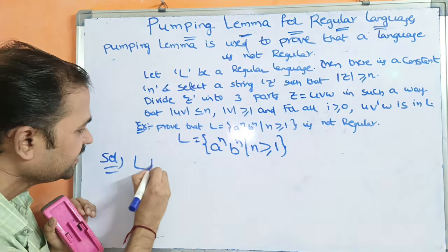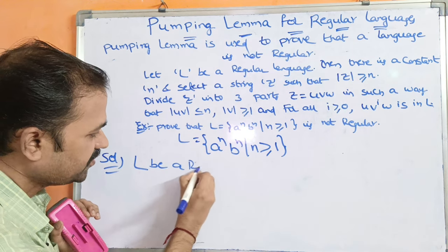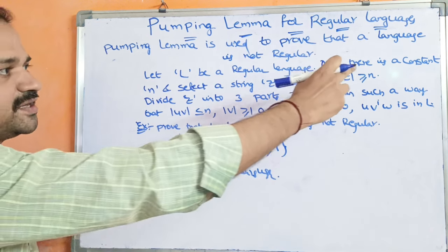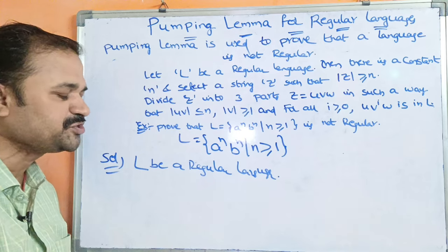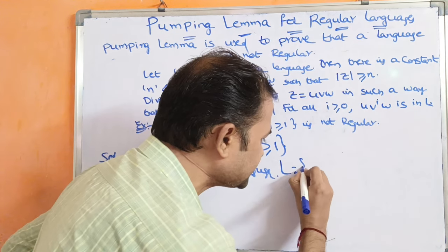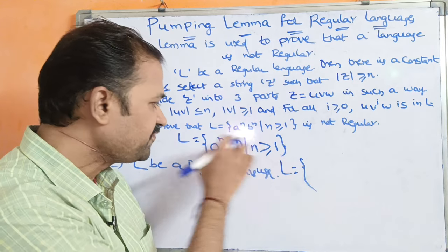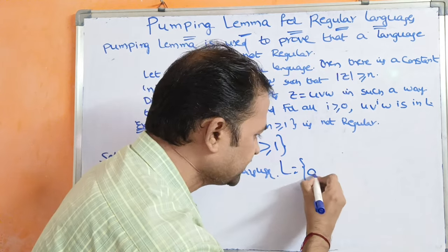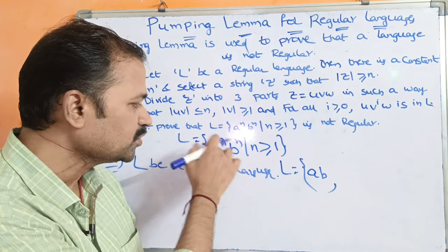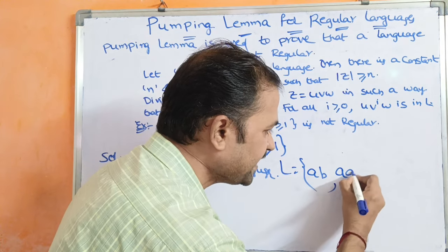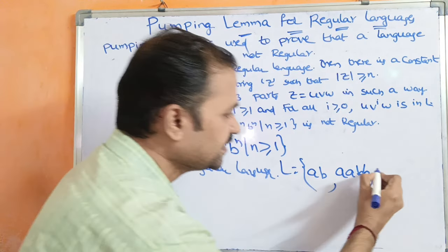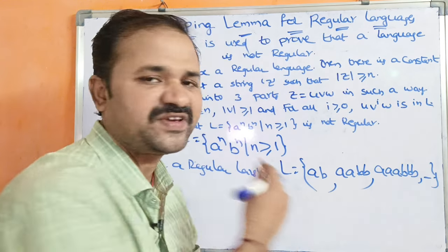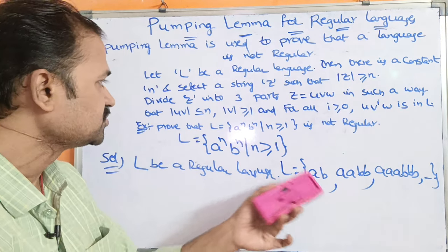So let L be a regular language. Then there is a constant N. Before that, let us see the strings in this language. If n=1, A^1 B^1 = AB. If n=2, A^2 B^2 = AABB. If n=3, A^3 B^3 = AAABBB. Likewise we can have N number of strings in the language.